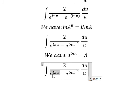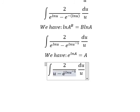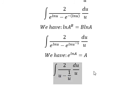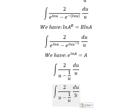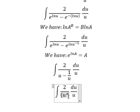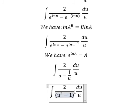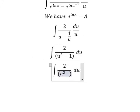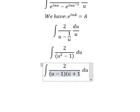So this one gives us u, and this one gives us one over u. Next, this expression is a difference of squares identity, so we change it into (u minus one)(u plus one).